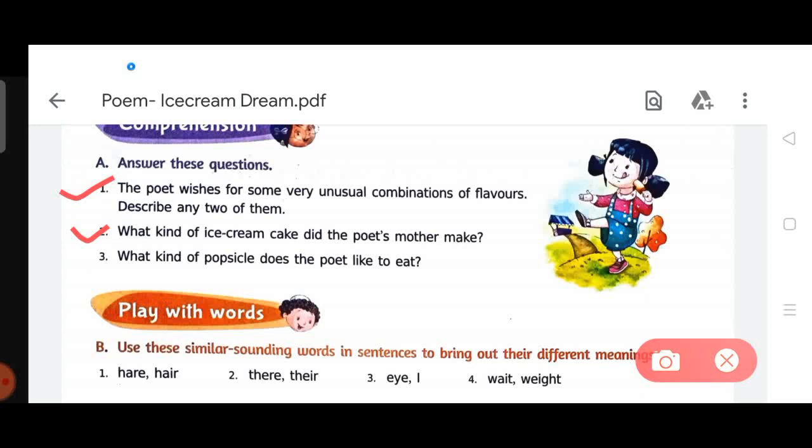Third, question number three: what kind of popsicle does the poet like to eat? Answer is: the poet likes to eat mango stick kind of popsicle.